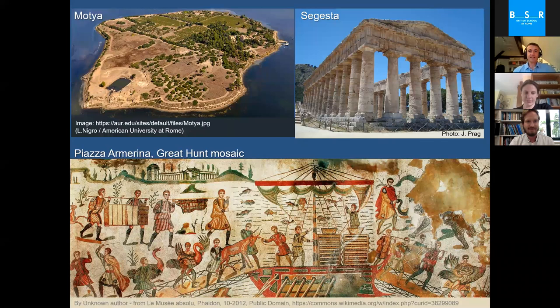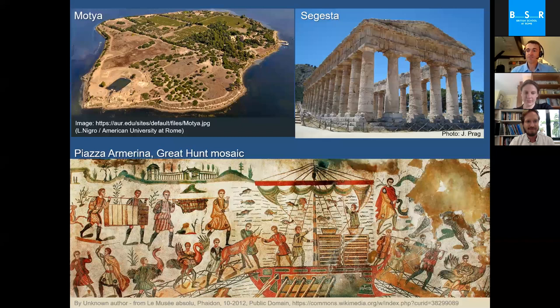Sicily is a remarkable opportunity to study a real cultural melting point — Braudel's continent in miniature — and a genuinely fascinating cultural crossroads at the heart of the ancient Mediterranean, famous for many things: the Phoenician colony at Motya, the Greek temples of Segesta, Selinunte, Agrigento, or for example the mosaics of the great late Roman villa at Piazza Armerina. But pointing to all of those already points to one of the fundamental problems in trying to study ancient Sicily.